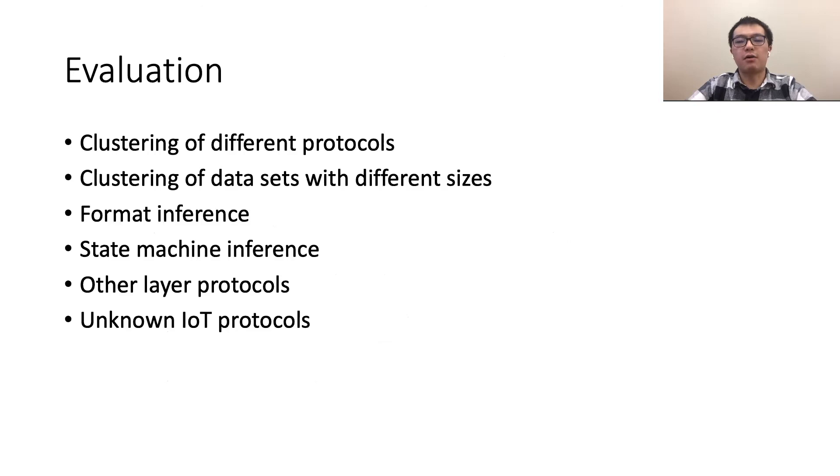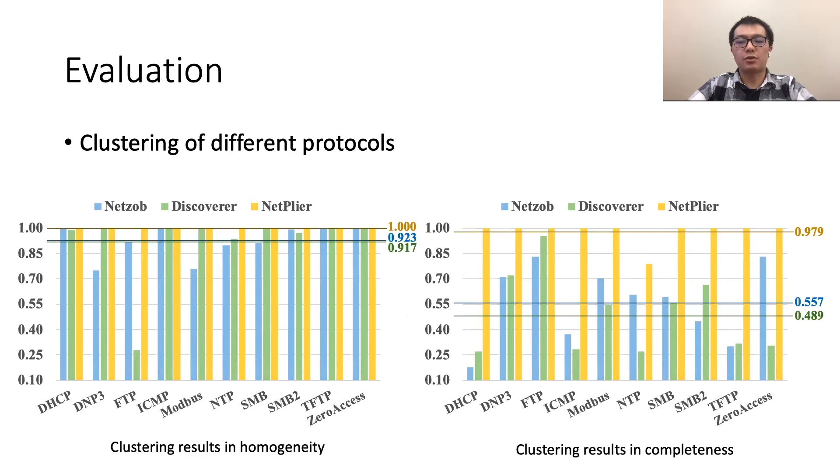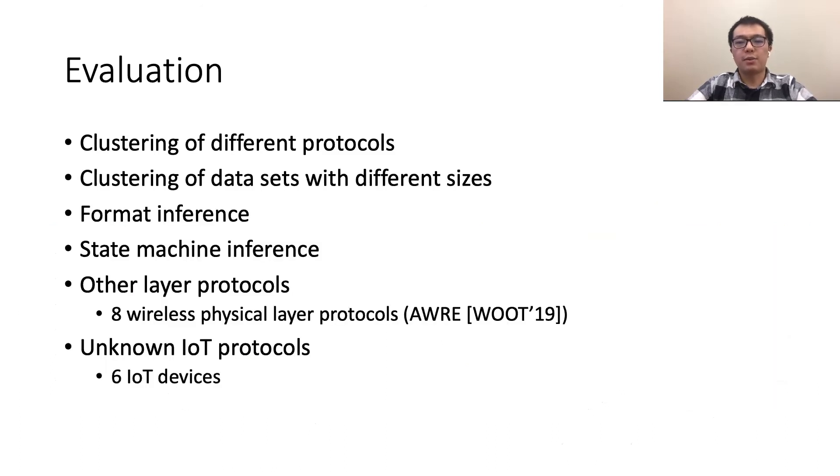For evaluation, we conduct a set of experiments. First, we compare our method with two state-of-the-art tools, Netzob and Discoverer, on 10 different protocols. Most of these protocols are binary protocols, which are thought more difficult to cluster than text protocols. We use the common metrics for clustering performance evaluation, which are called homogeneity and completeness. Homogeneity means that each cluster contains only messages of a single type, while completeness means all messages of a given type are assigned to the same cluster. Both are the larger the better. We can see that since NetPly recognizes keywords correctly, both metrics are 100% for almost all protocols, substantially outperforming Netzob and Discoverer. We also show the stability of NetPly by evaluation of datasets of different sizes and the benefits of our cluster results in downstream format and state machine inference.